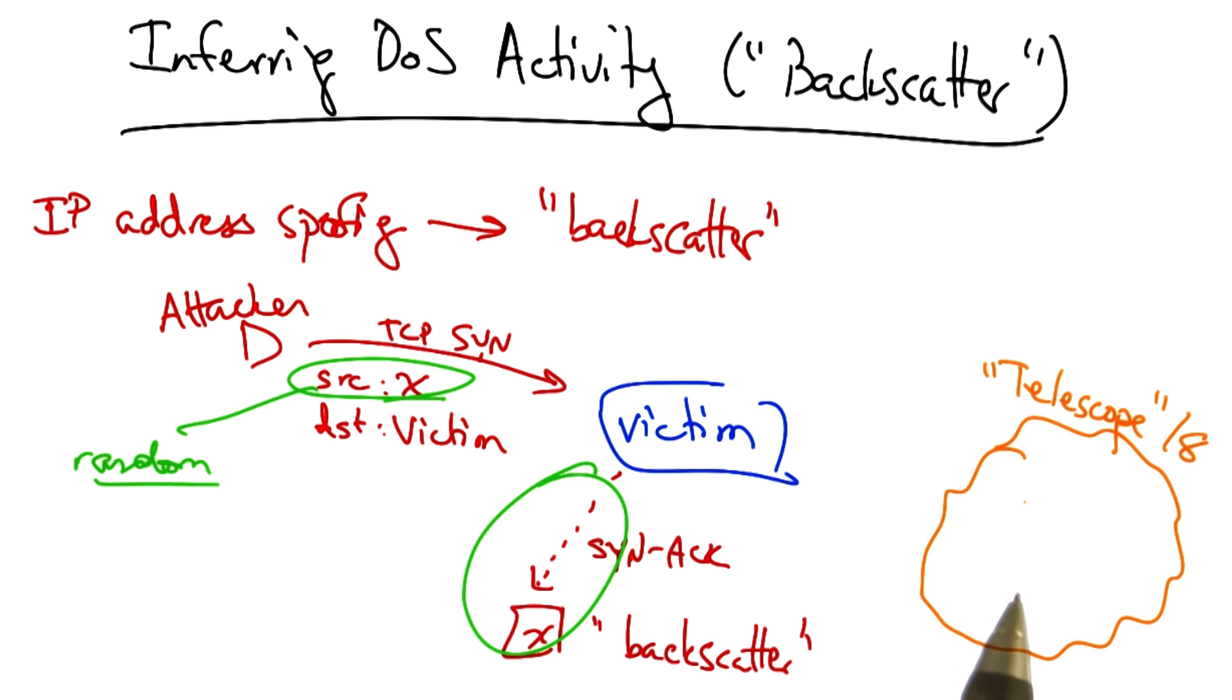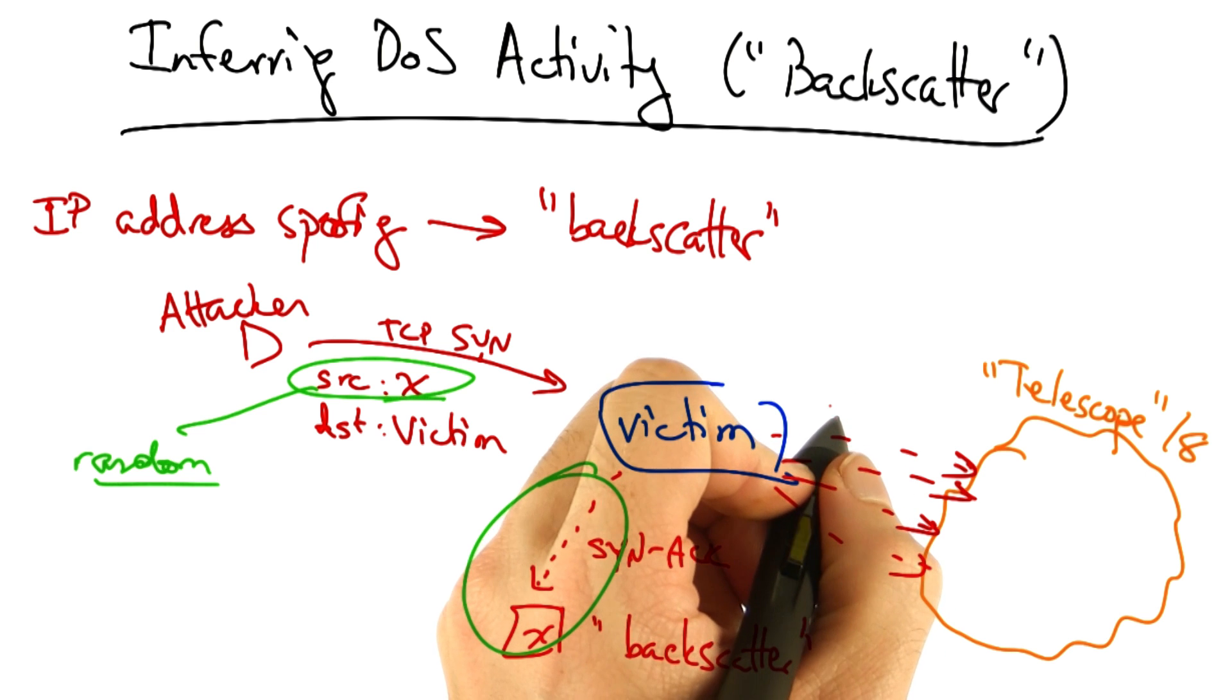then we could set up a portion of the network where we could monitor this backscatter traffic, coming back as SYN-ACK replies to forged source IP addresses.